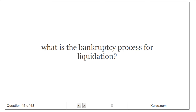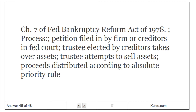What is the bankruptcy process for liquidation? Chapter 7 of the Federal Bankruptcy Reform Act of 1978: a petition is filed by the firm or creditors in federal court. A trustee elected by creditors takes over the assets. The trustee attempts to sell assets, and proceeds are distributed according to the absolute priority rule.